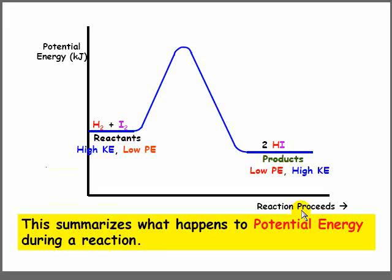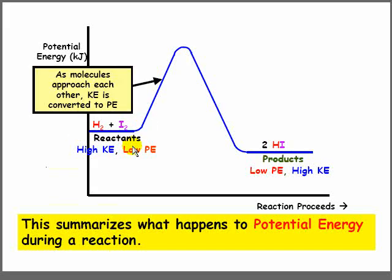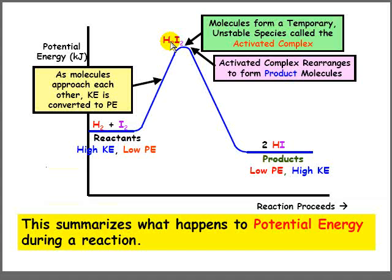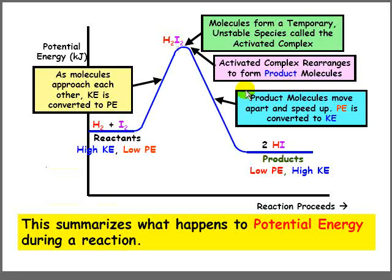Now we can summarize what happens to potential and kinetic energy during a collision or a reaction. The reactants start out with high kinetic energy and low potential energy, which is why they are fairly low on this graph. As the molecules approach each other, kinetic goes down and is converted into potential, so potential energy goes up. When the molecules hit each other, they form a temporary unstable species called the activated complex. The activated complex rearranges to form the product molecules, 2HI in this case. The product molecules move apart and speed up, potential energy is converted into kinetic, and the products at the end have low potential energy and high kinetic energy.